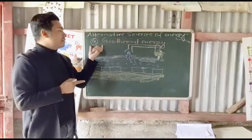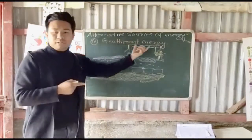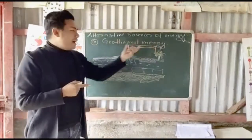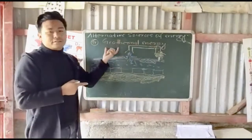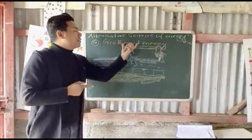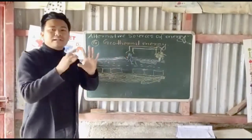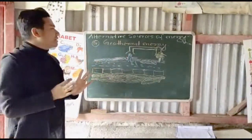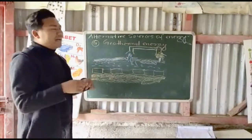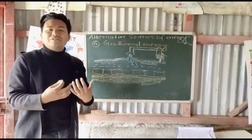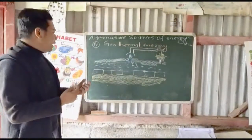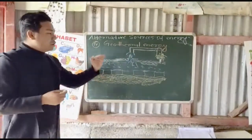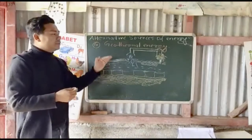The fourth alternative source of energy is geothermal energy. As the word suggests, 'geo' relates to the earth, and 'thermal' relates to temperature. So geothermal energy is the energy that comes from the earth's surface and interior heat.